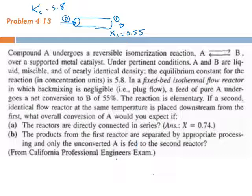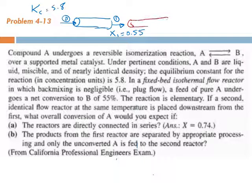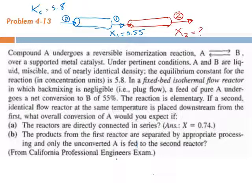What's required is the overall conversion of A. That's what you need to calculate if a second identical reactor, which has the same mass of catalyst or the same volume, is placed downstream. Let's see option A: the reactors are directly connected in series. So we have another reactor connected here. We can call this stream 2 and then we have here X2.